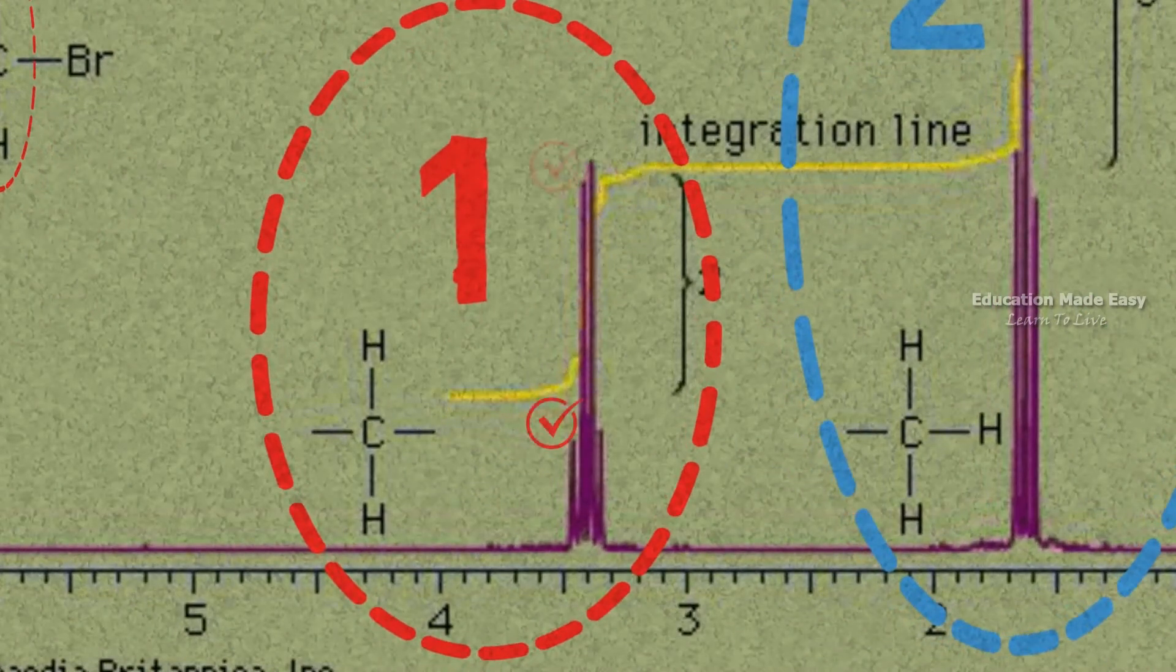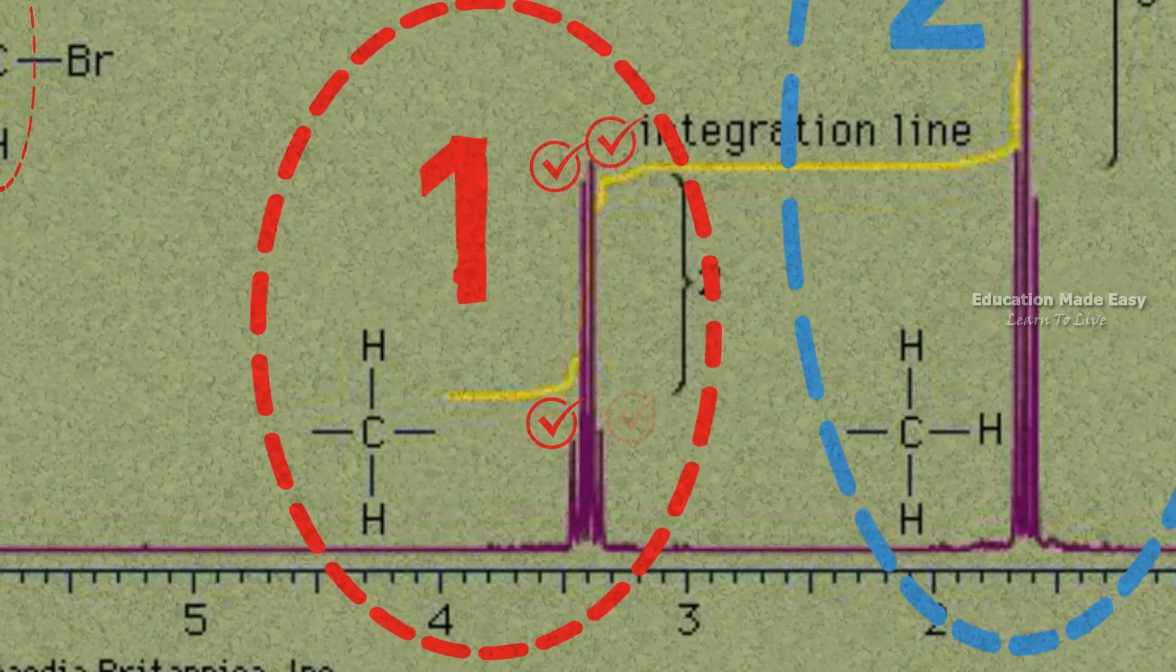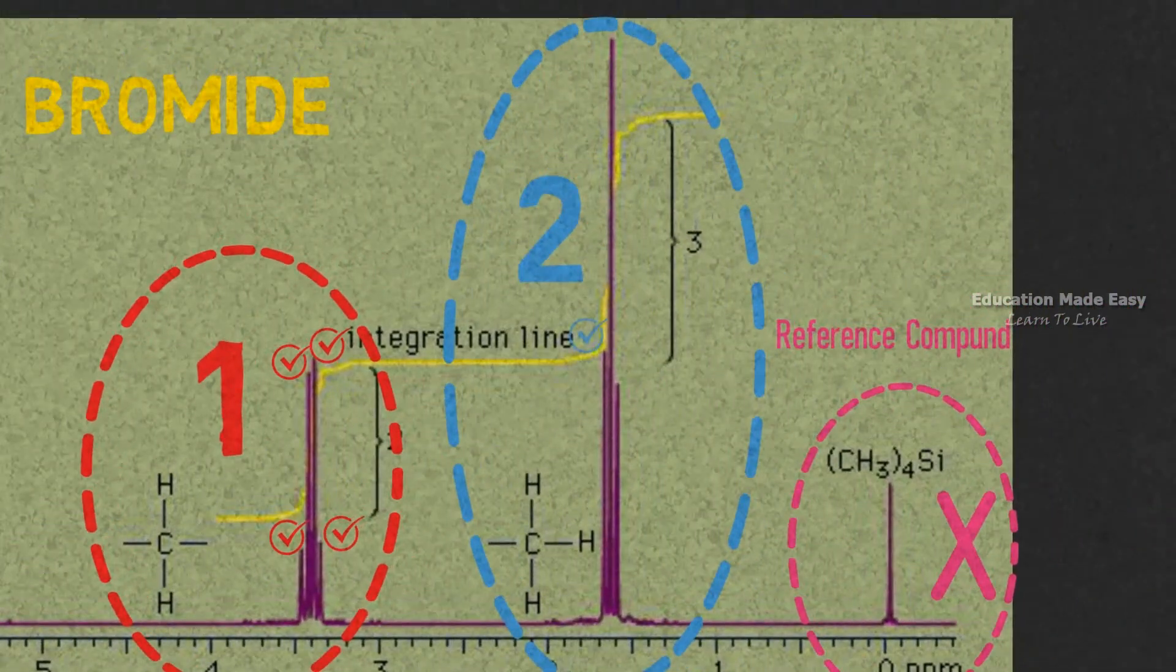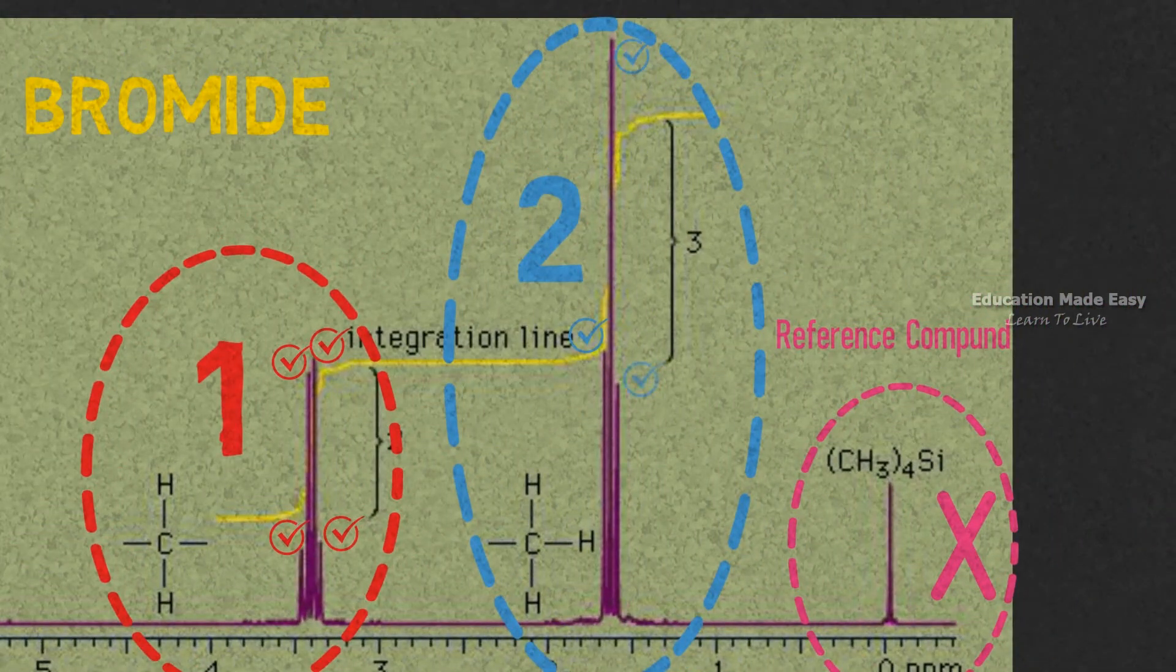In signal 1, we can see there are four peaks, and in signal 2, we can see there are three peaks.